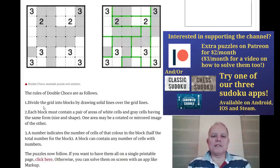You have to divide the grid into blocks by drawing solid lines over the grid lines. So as you can see up here, you divide the grid into blocks. The shapes don't have to be rectangular. Each block must contain a pair of areas of white cells and grey cells having the same form, size and shape.